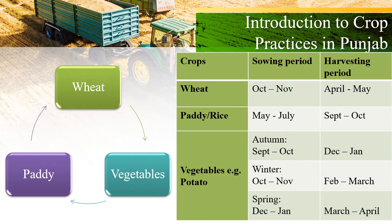As we all know, wheat, rice, and vegetables — for example, potatoes — are commonly cultivated crops in Punjab. This is usually done according to the sowing and harvesting season of respective crops. For instance, wheat is usually sown during October to November and harvested during April to May. Similarly, the timeline for rice and vegetables such as potatoes has been presented for a glance.